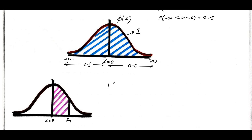I need to find out the probability of z lying between 0 to z1. I am giving the theoretical approach first, then the shortcut on how to solve this problem without using a distribution table. The probability of z lying between 0 to z1 is given by the formula phi of z1.